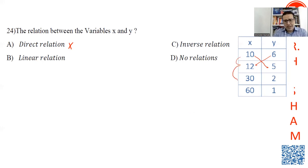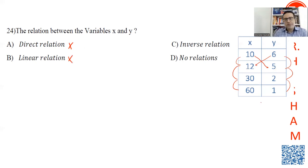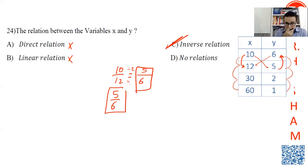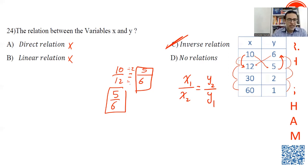If you're adding the same value to x and a corresponding same value to y — for example adding 2 in x and then 3 in y — this is linear. But from 6 to 5 is not the same change as from 5 to 2, so it's not linear. For inverse relation, find 10 over 12 and 5 over 6 — if they have the same ratio it's inverse. So x1 over x2 equals y2 over y1, confirming it's an inverse relation.